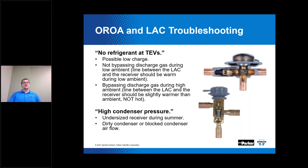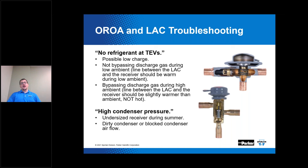Another complaint is high condenser pressure, which could indicate an undersized receiver during summer. Other causes include a dirty condenser or blocked condenser airflow. If the receiver is undersized, the technician will have to remove refrigerant every spring to prevent high head pressures, then add refrigerant back in the fall so the system contains enough refrigerant for flooding of the condenser. This adds an avoidable labor charge that would be eliminated with a properly sized receiver.